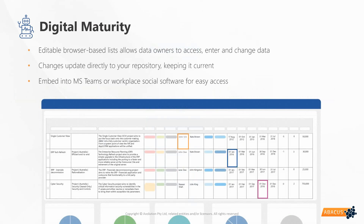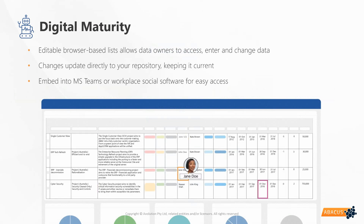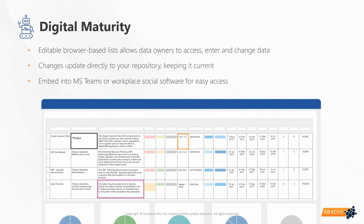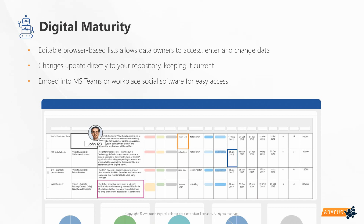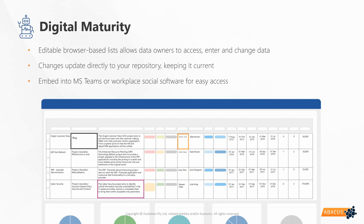One key part of digital maturity is having access to information and having IT professionals across your enterprise maintaining and accessing it. Data owners often need quick access to data such as application lists. We don't want to be continually providing manual reports, but instead have a way to provide this data. This is showing an enterprise catalog, which can be embedded in Microsoft Teams or company intranets, allowing architects and other users to answer everyday questions like who owns this application or who else uses this application, as well as provide up-to-date information.